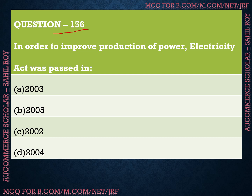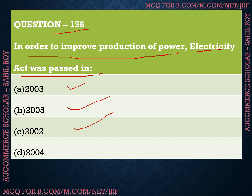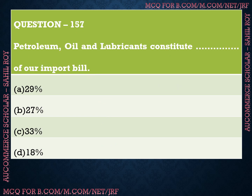Question number 156: In order to improve the production of power/electricity, the Electricity Act was passed in which year? We have four options: Option A is 2003, Option B is 2005, Option C is 2002, and Option D is 2004. The correct answer is Option A — in the year 2003, the Electricity Act was passed in order to improve the production of power.